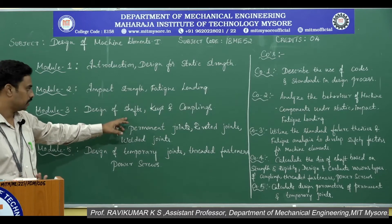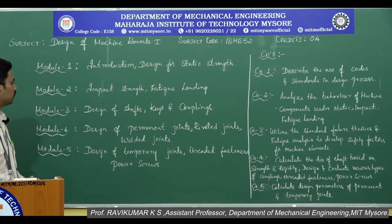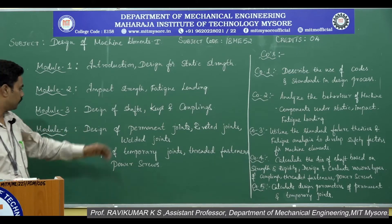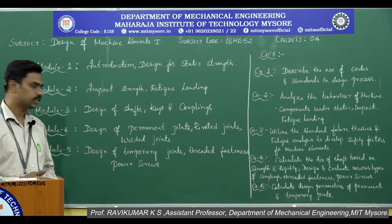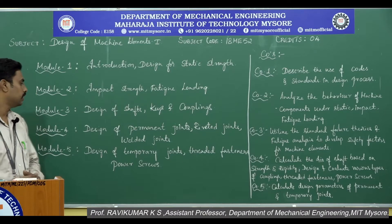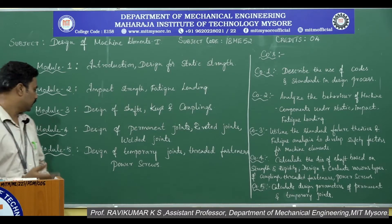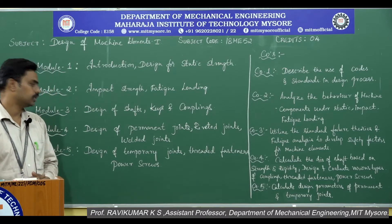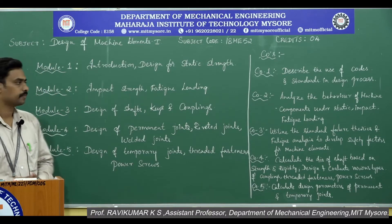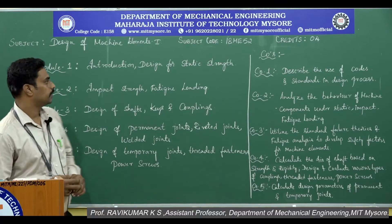Shafts, keys, and couplings are among the machine elements covered in Module 3. In Module 4, you are going to learn about the design of joints — permanent joints such as riveted as well as welded joints. In Module 5, you are going to learn about the design of temporary joint elements like threaded fasteners and power screws. This is the overview of the syllabus.